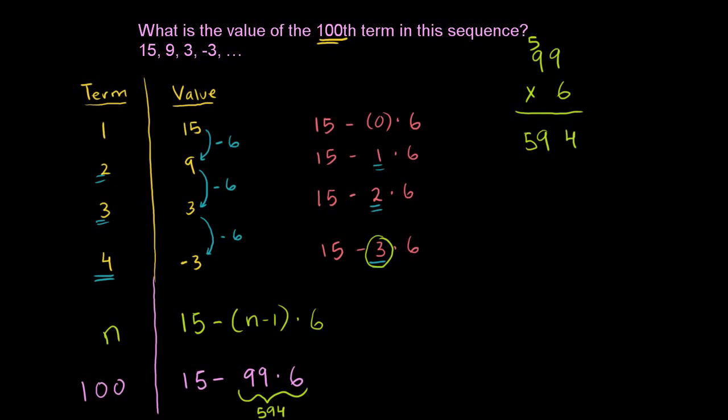So this right here is 594. And then we want to figure out what 15 minus 594 is. This can sometimes be confusing. But the way I always process this in my head is I say this is the same thing as the negative of (594 minus 15). If you don't believe me, distribute out this negative sign. Negative 1 times 594 is negative 594. Negative 1 times negative 15 is positive 15. So these two statements are equivalent.